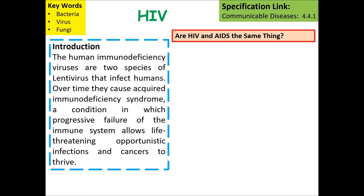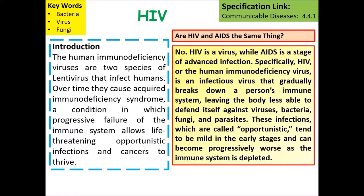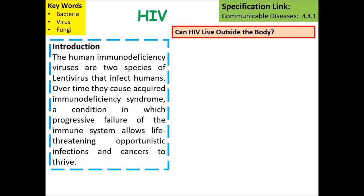Are HIV and AIDS the same thing? The answer is no. HIV is a virus while AIDS is a stage of advanced infection. HIV, or human immunodeficiency virus, is an infectious virus that gradually breaks down a person's immune system, leaving the body less able to defend itself against other viruses, bacteria, fungi and parasites. These infections, often called opportunistic, tend to be mild in early stages and can become progressively worse as the immune system is depleted.